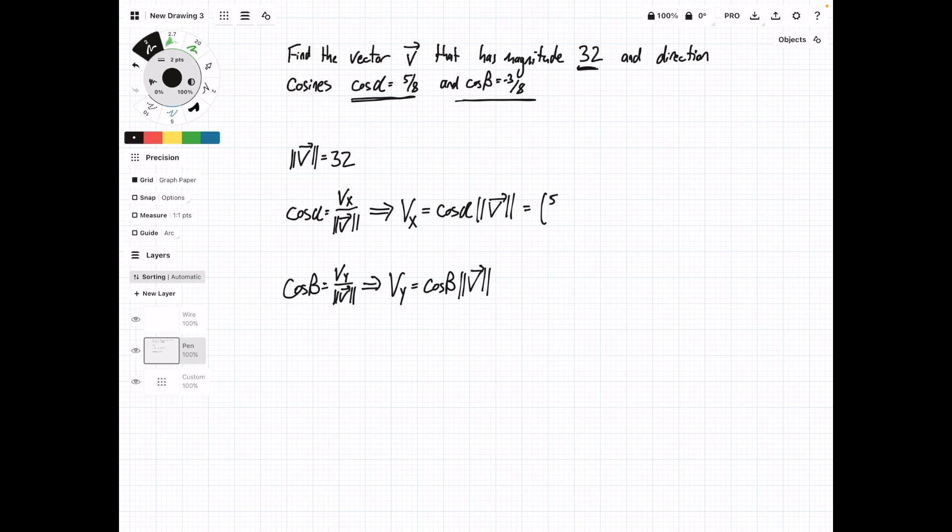This one is going to be cosine alpha, which is 5/8 times 32, and this comes out to be 20 equal to vx. And for this second one, we can do negative 3/8, which is cosine beta times 32. And this is going to be negative 12 equals vy. So our vector that we're dealing with is 20, negative 12.